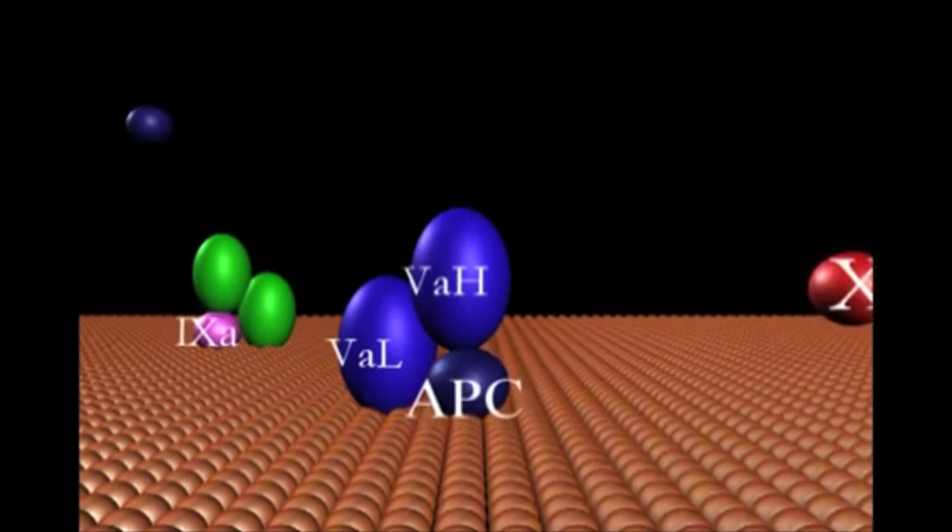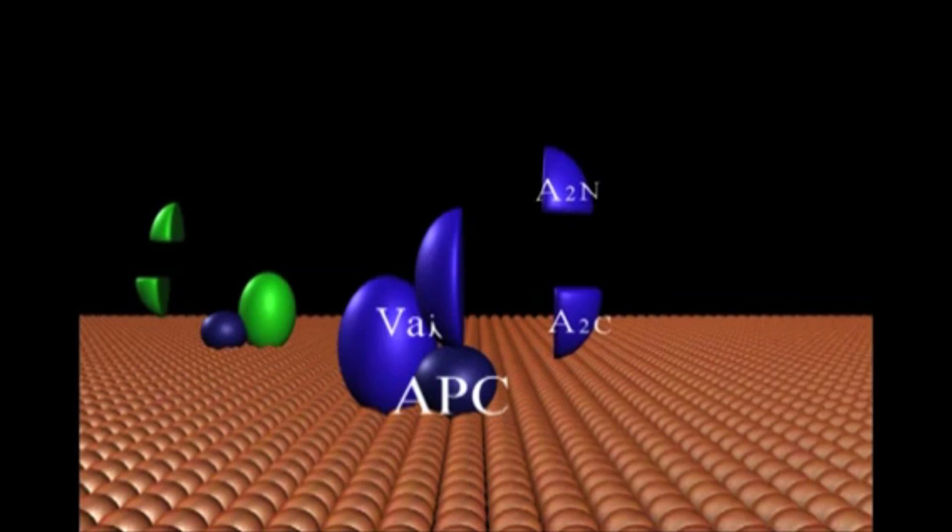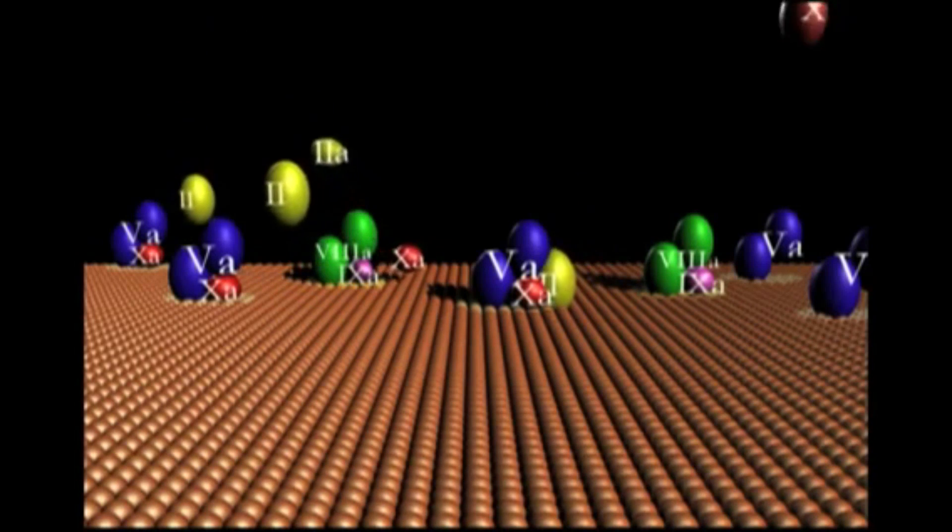If the pathologic stimulus is sufficient to overcome the stoichiometric and dynamic inhibitory systems, the reaction will proceed with thrombin continuing to produce its activation products.